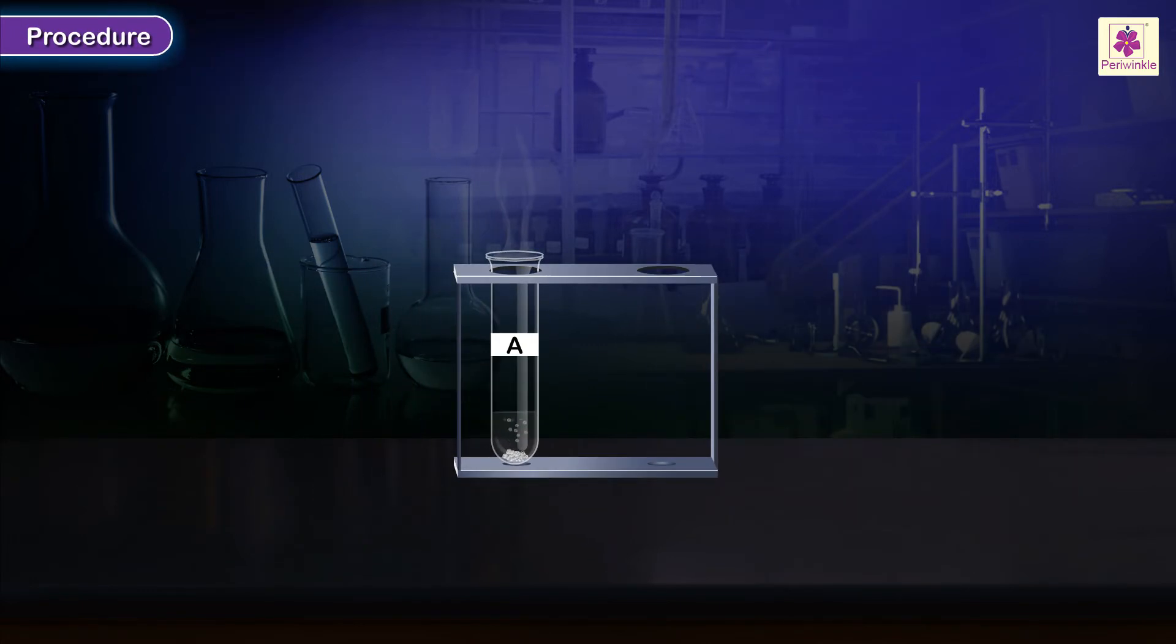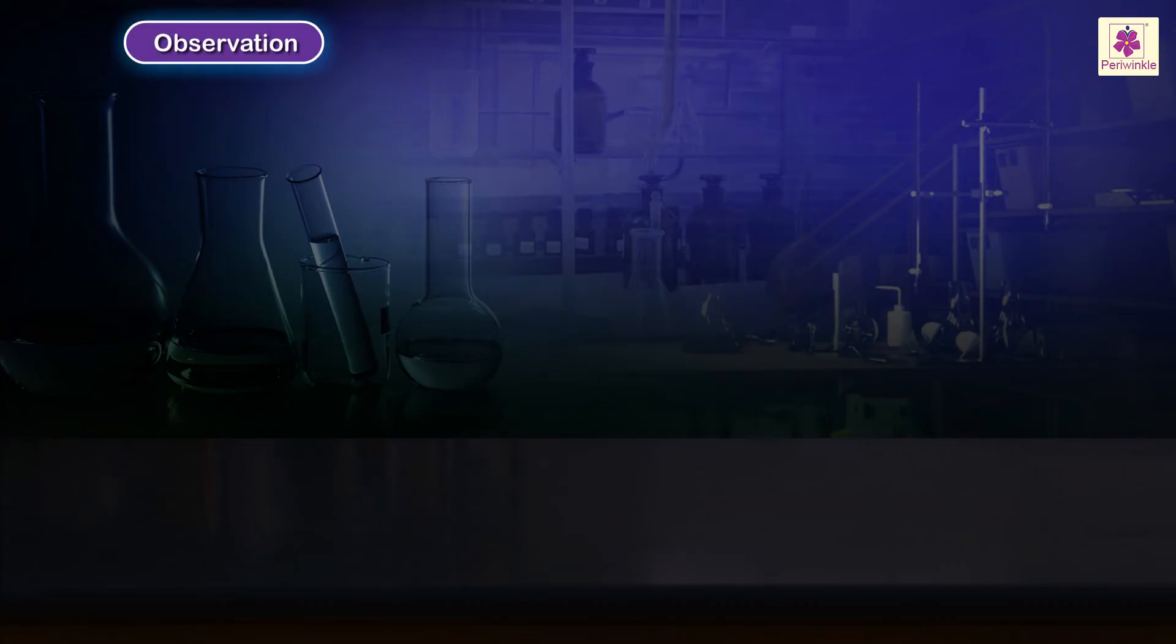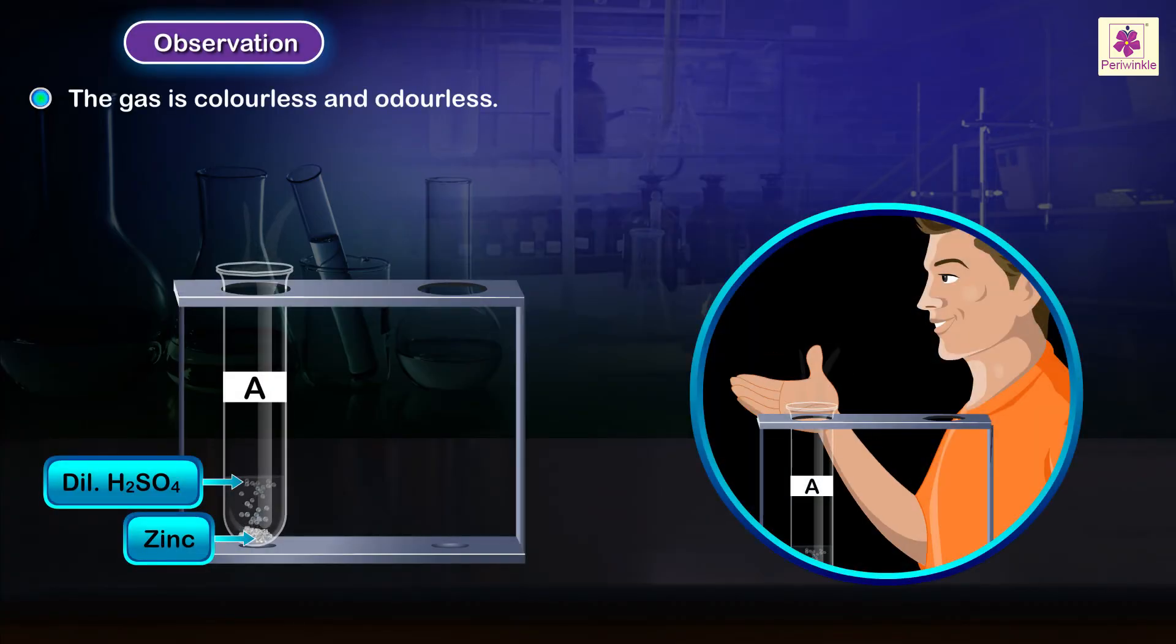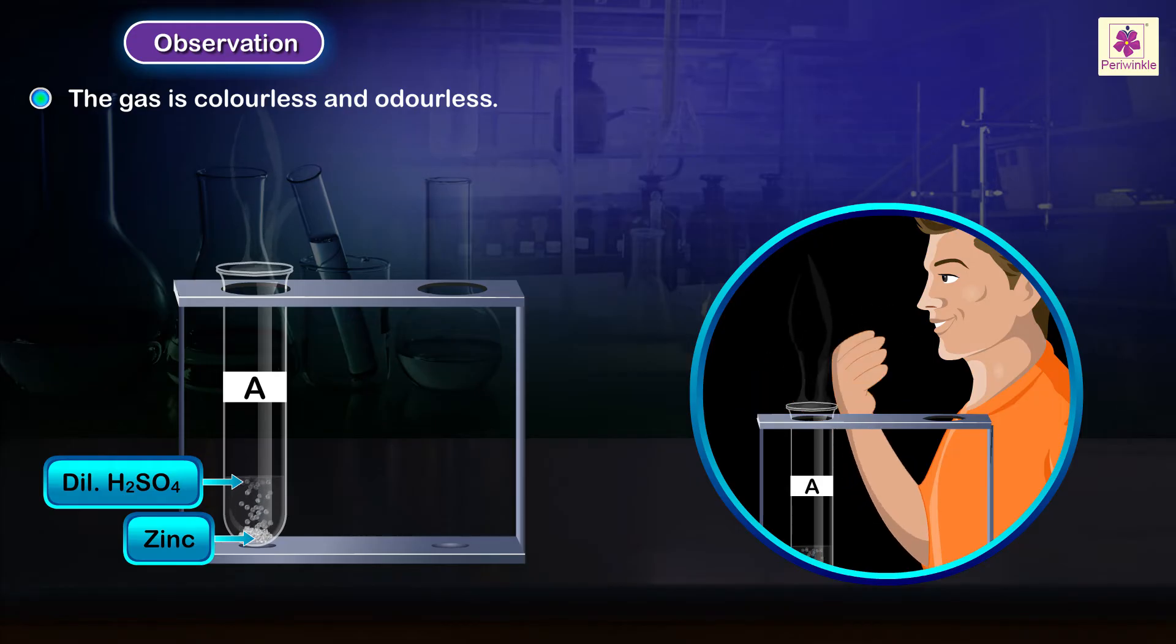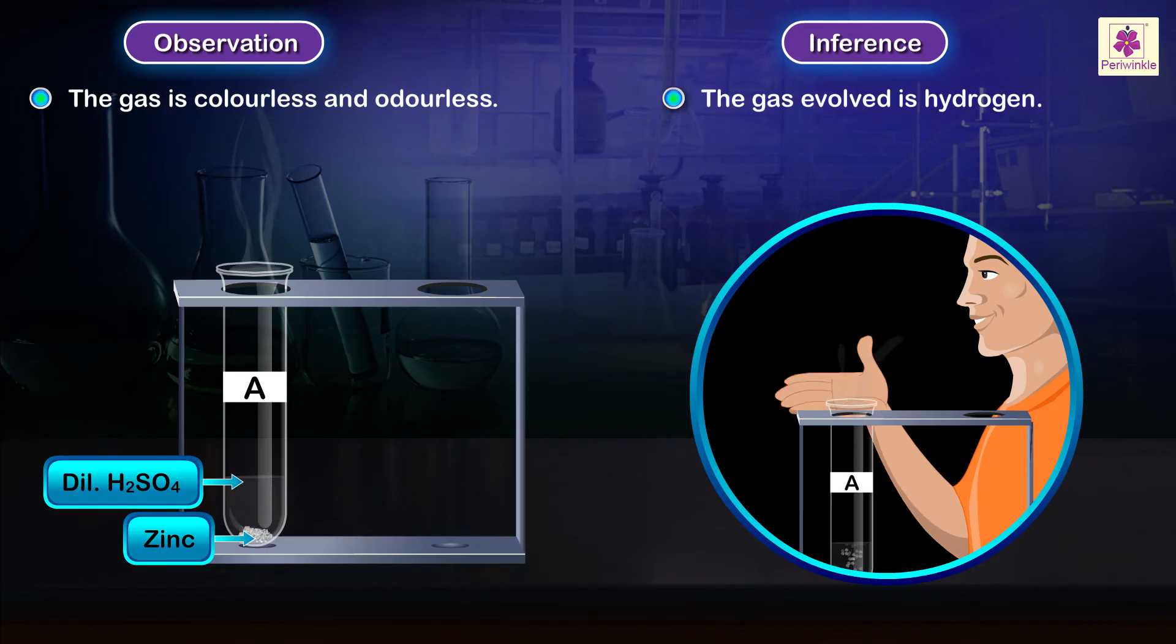Procedure: Fan the gas evolved gently towards your nose with your hand and note the smell of the gas. Observation: The gas is colorless and odorless. Inference: The gas evolved is hydrogen.